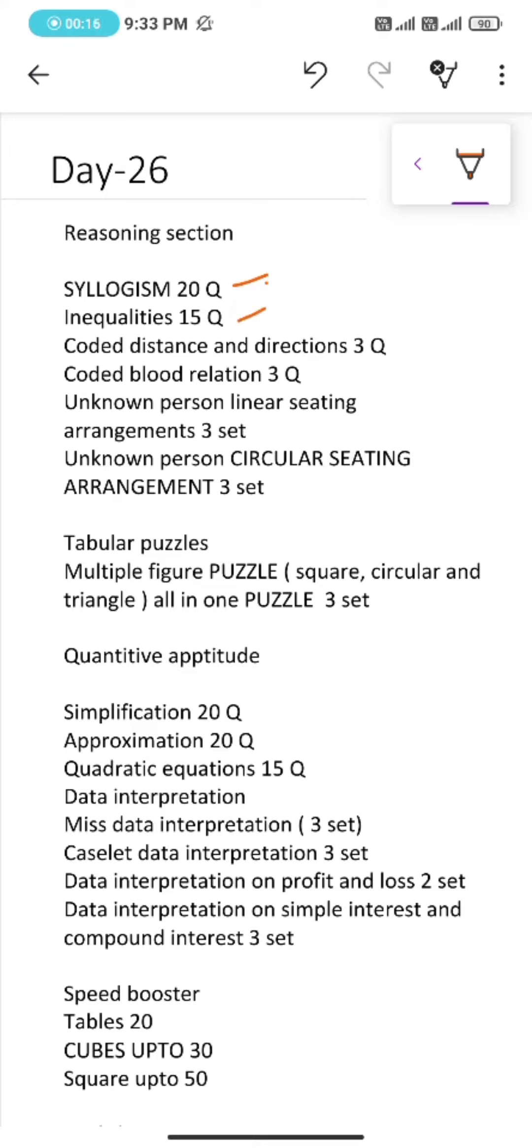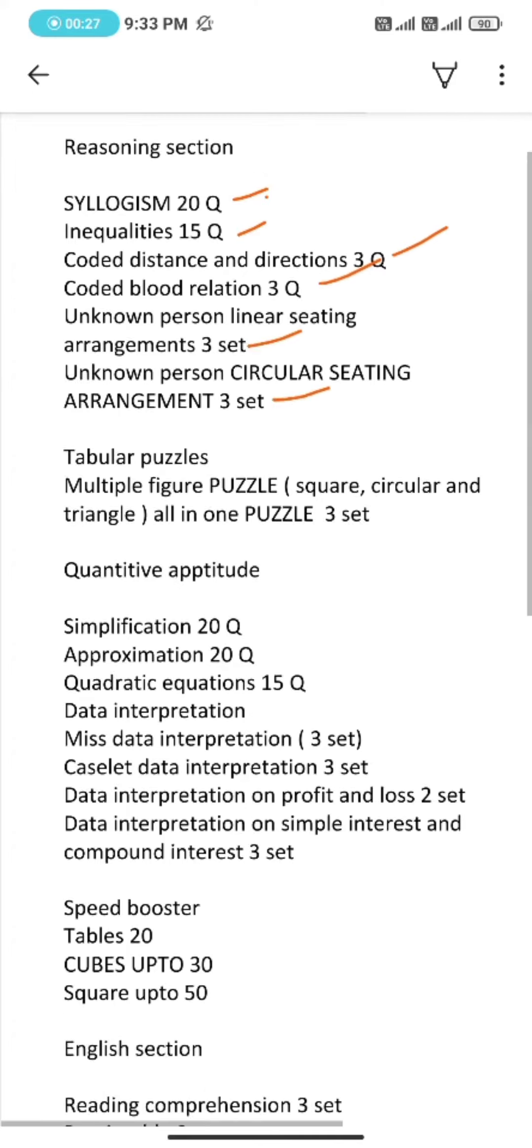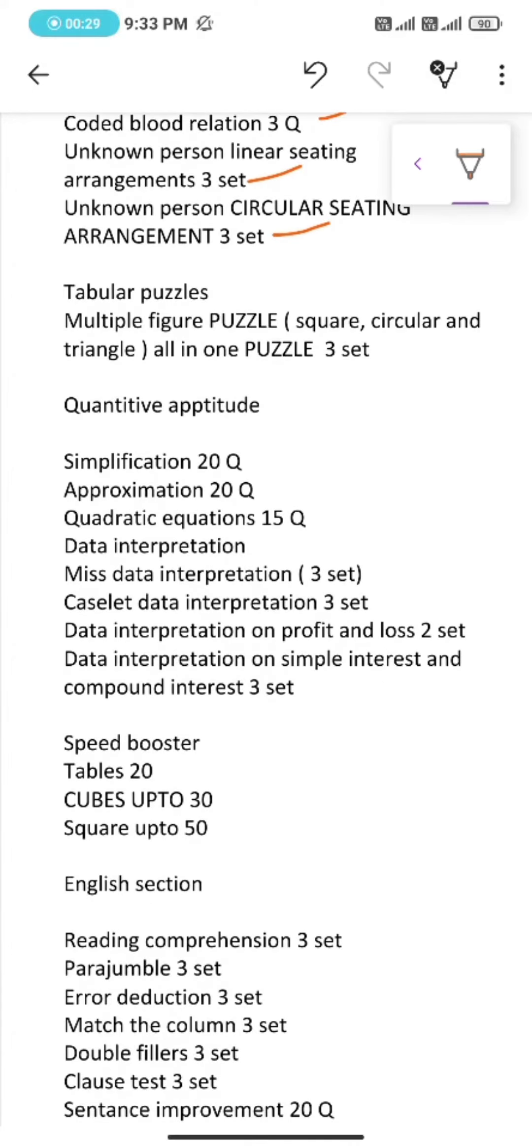Under reasoning section, we will be practicing syllogism 20 questions, inequalities 15 questions, coded distance and directions 3 questions, coded blood relation 3 questions, unknown person linear seating arrangement 3 sets, unknown person circular seating arrangement 3 sets.